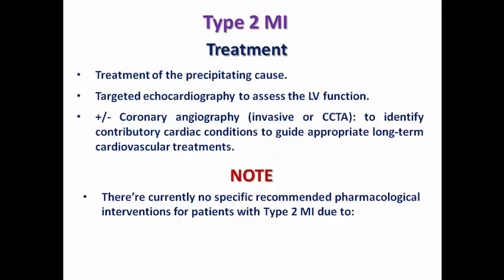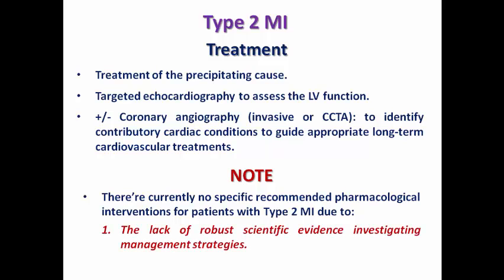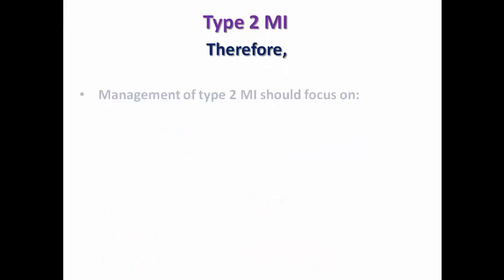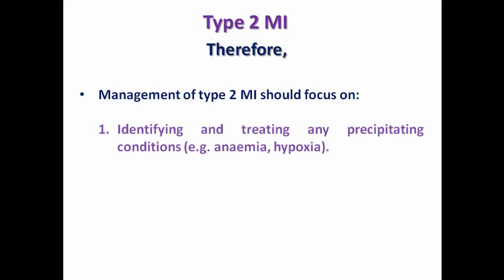There is no specific recommended pharmacological treatment for type 2 MI due to lack of robust scientific evidence and the wide range of precipitating causes. There is no universal treatment — just treat the cause. Treatment focuses on identifying and treating precipitating conditions like anemia, hypoxia, or hypotension, and controlling cardiovascular risk factors.